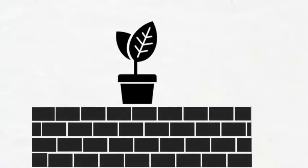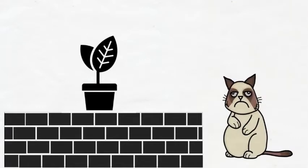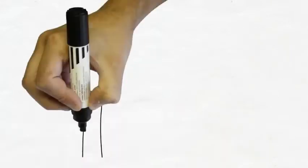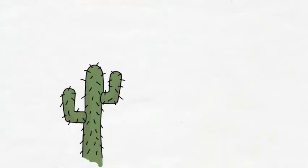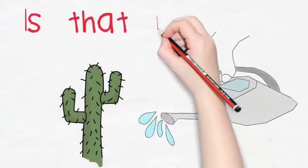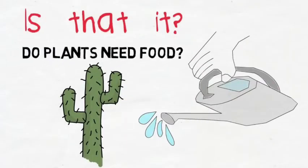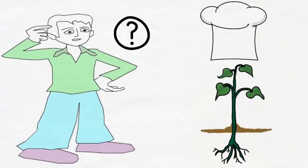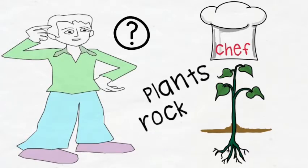Pay attention for a moment to that plant in your balcony. Unlike your cat, it does not walk around requesting, or rather demanding, food. Your plant is happy with the water you give it. But is that all a plant needs to survive? Water? Does a plant need food? The answer is yes. So where does a plant get its food from? Well, plants make their own food.